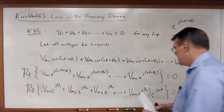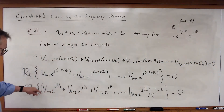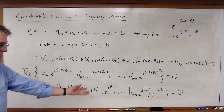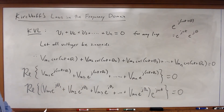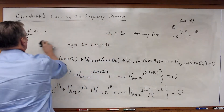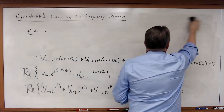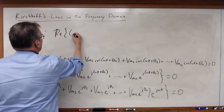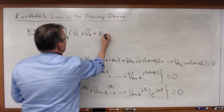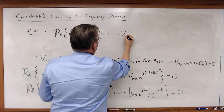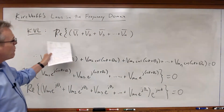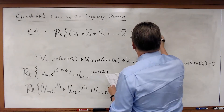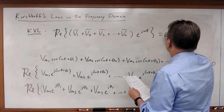Looking at this, I can see that the bracketed expression is a complex number that represents the magnitude and the phase angle. So by definition, that is the phasor. I can rewrite this as: the real portion of V1 plus V2 plus V3, all the way to V sub n — the real portion of the phasors — multiplied times e to the j omega t, must be equal to zero.